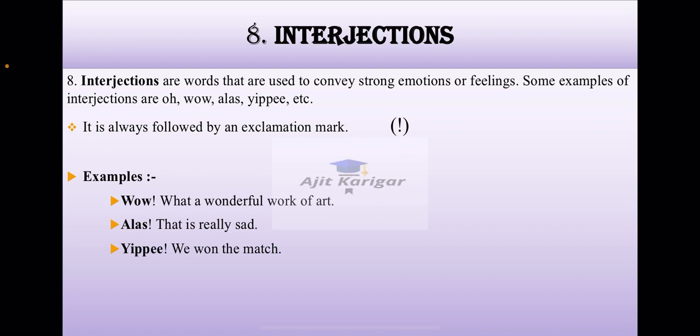Interjection, the last part of speech. Interjections are words that are used to convey strong emotions or feelings. Some examples of interjections are wow, alas, yippee, etc. It is always followed by an exclamatory mark.